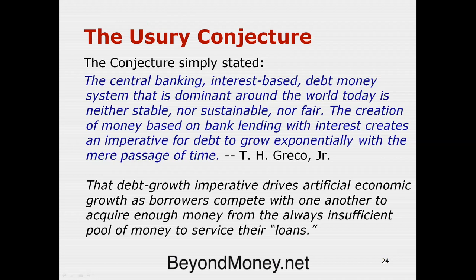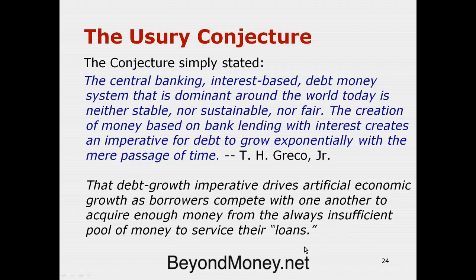I've written a white paper called The Usury Conjecture, which I've put up on my website. In a nutshell it says: the central banking interest-based debt-money system dominant around the world today is neither stable, nor sustainable, nor fair. The creation of money based on bank lending with interest creates an imperative for debt to grow exponentially with the passage of time. That, in turn, forces artificial economic growth as borrowers compete with one another to acquire enough money from the always insufficient pool of money to service their loans.